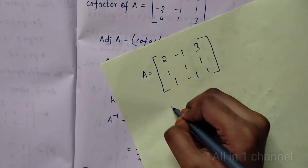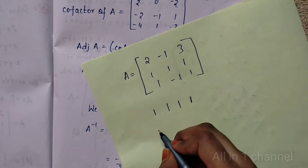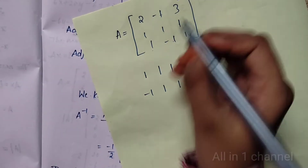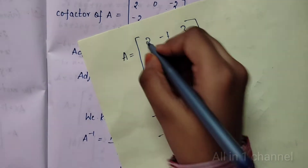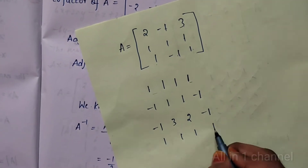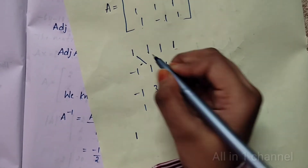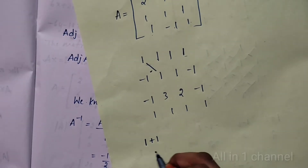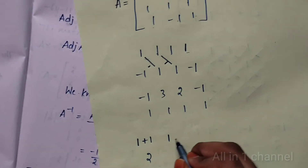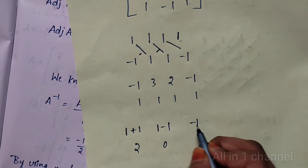To find cofactors, write the matrix elements and cross multiply. For element (1,1): 1 into 1 minus (-1) into (-1) equals 1 minus 1 equals 0. Wait — 1×1 = 1 minus (-1)×(-1) = 1, giving 1 minus 1 plus 1 equals... computing each minor by deleting corresponding rows and columns.